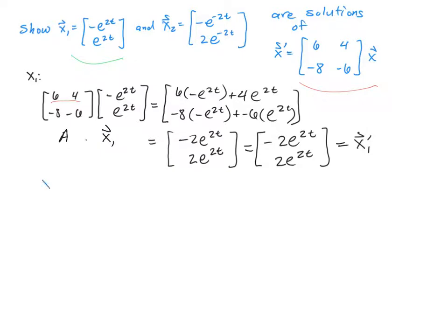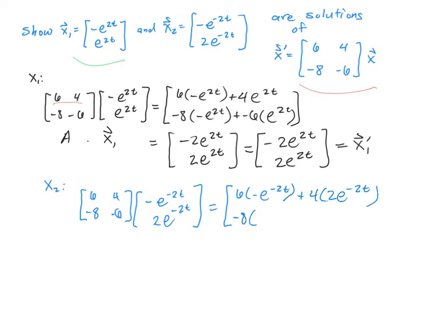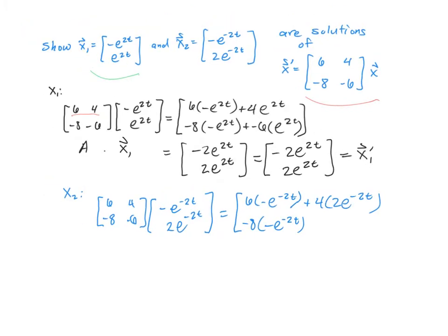We'll do x2 in blue for contrasting colors. For x2, I'm going to multiply matrix A — which is 6, 4, negative 8, and negative 6 — times the solution vector: negative e to the negative 2t and 2 times e to the negative 2t. Just like before, we'll multiply it out: 6 times negative e to the negative 2t plus 4 times 2 e to the negative 2t. For the second row: negative 8 times negative e to the negative 2t plus negative 6 times 2 e to the negative 2t.